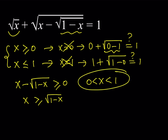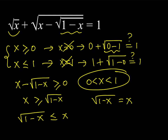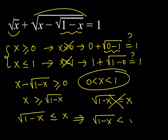We have more information than that. This tells us that the square root of 1 minus x is less than or equal to x. But here's the question: can the square root of 1 minus x equal x? If square root of 1 minus x equals x, that implies that the expression inside is 0. But that's impossible because x cannot equal 1. So this is not going to work either, which means the correct inequality is the strict inequality: square root of 1 minus x is less than x.